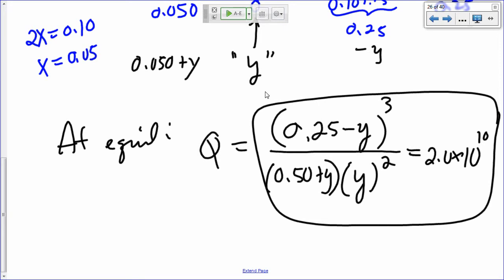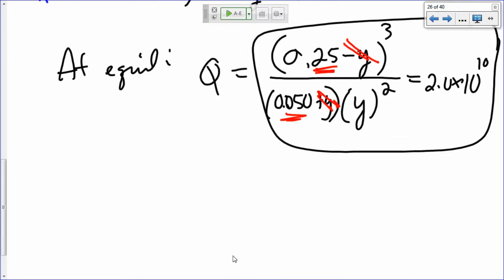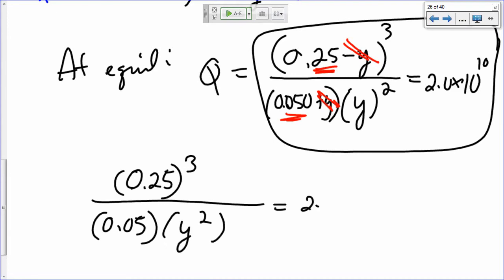Can I solve for Y here? Should you be expanding your numerator? What simplifying assumption can I make? I know that this Y is just a trace amount. Because my favored side, I have a very large Keq favoring the product. So I can say compared to 0.25, that Y is going to be negligible, so I can neglect that. Compared to 0.05, that Y is going to be negligible, I can neglect that. And that makes it easy for the algebra now. What happens to your algebra now? It's 0.25 cubed over 0.05 times Y squared equals 2.0 times 10 to the 10.